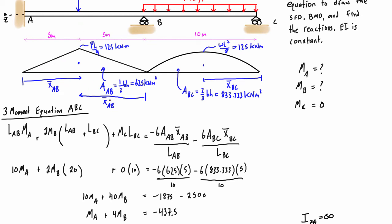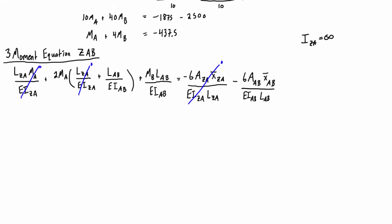And x-bar AB—but because this problem, because this load was right in the center, then these two are the same. Now, if this load was off-center, then this x-bar AB would be different than this one. So just be careful that you're always coming from the outsides of the spans that we're considering when we're using the three-moment equation.